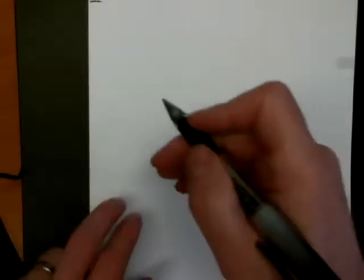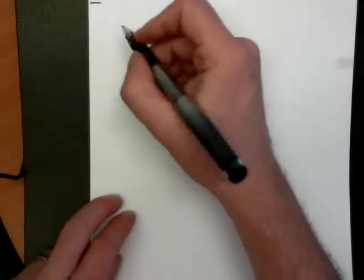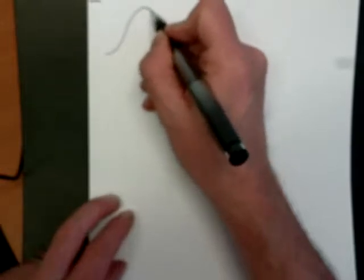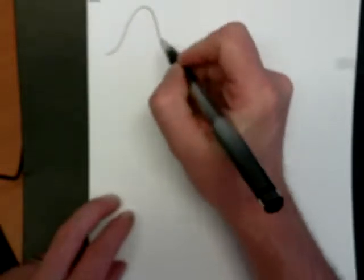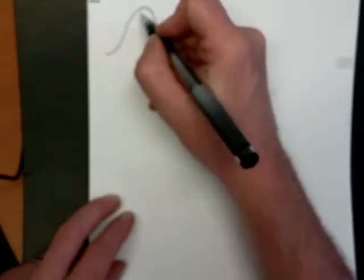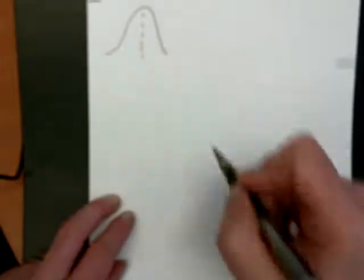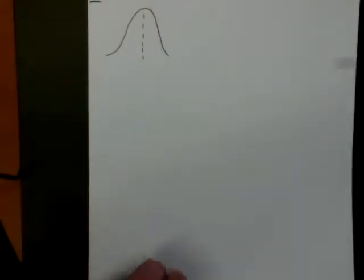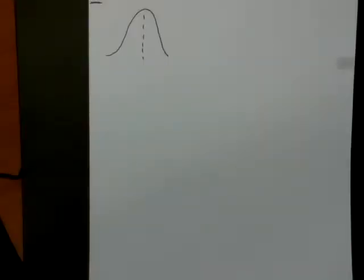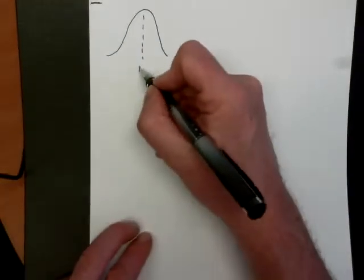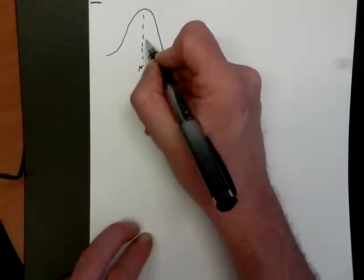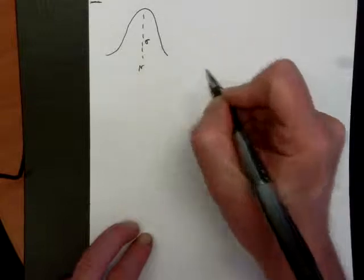A quick recap on the normal distribution. The normal distribution is bell-shaped. It has a mean in the centre, and we have the standard deviation here.